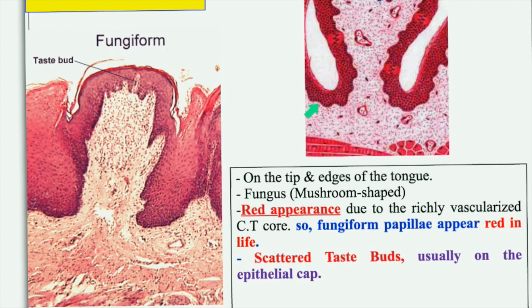The fungiform papillae are called fungiform because they look like a fungus or mushroom — they have a wide apex and a narrow base. They are covered by non-keratinized stratified squamous epithelium and have a few taste buds. The connective tissue is rich in blood vessels, giving these papillae their red coloration, so they appear as red spots on the dorsum of the tongue. An actual section shows the mushroom shape with a wide apex and a narrow base.